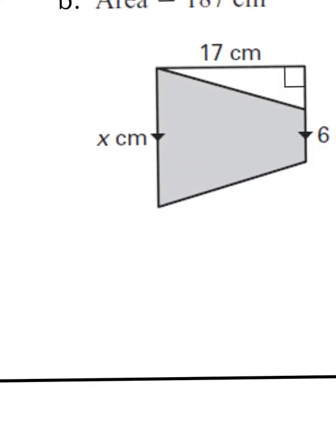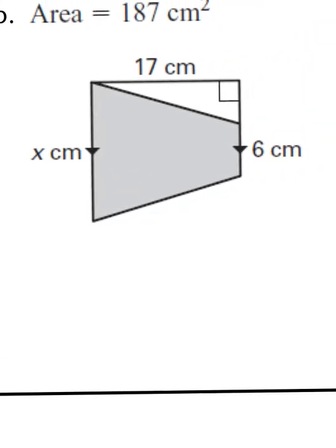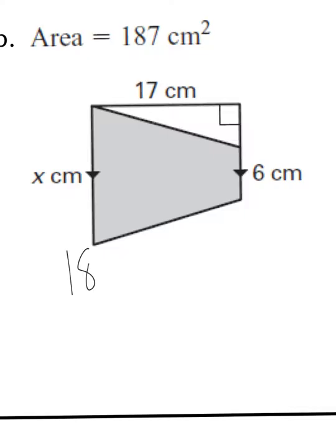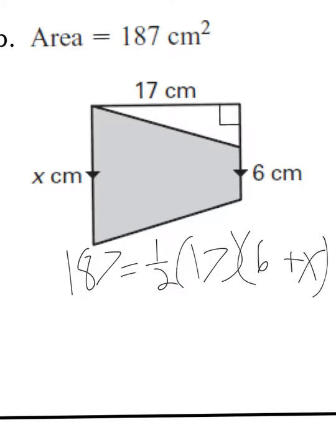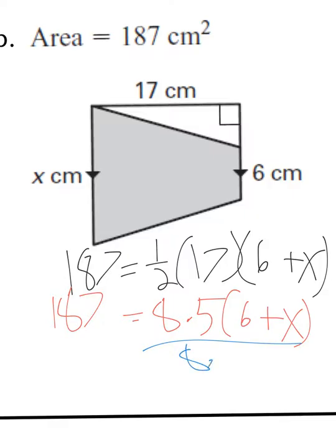If you're looking at the next one, I give you the height and you're missing a base. My area is 187 equals one half times height of 17 times base 1 of 6 plus base 2 of x. Simplify what you can: one half times 17, that's 8.5. So 8.5 times 6 plus x equals 187. You can distribute that 8.5 to 6 plus x, or you can divide it out. I think it's actually a little bit easier if we divide it out first. But if you distributed it, you're gonna wind up getting the same answer.